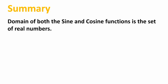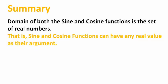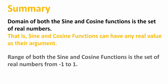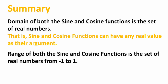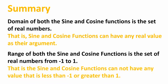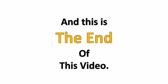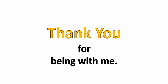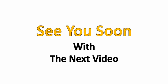Summary: the domain of both the sine and cosine functions is the set of real numbers — that is, sine and cosine functions can have any real value as their argument. The range of both the sine and cosine functions is the set of real numbers from -1 to 1 — that is, they cannot have any value less than -1 or greater than 1. This is the end of this video. Thank you for being with me; see you soon with the next video. Stay happy, goodbye.